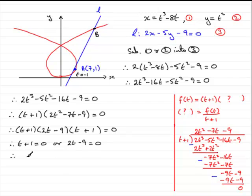Well, this one leads to t equaling minus 1. Or, in this case, if we add 9 and divide by 2, we end up with t equaling 9 over 2. Now, we know that t equals minus 1 was the value at a. The value at b must be when t is equal to 9 over 2. So all we need to do is substitute 9 over 2 into here for x and into here for y. And I'll leave it up to you to do that.